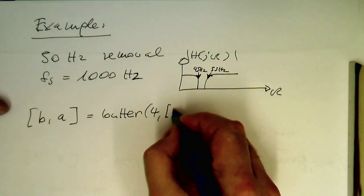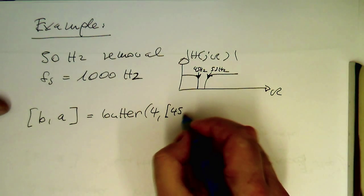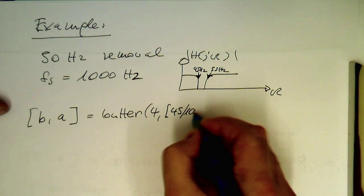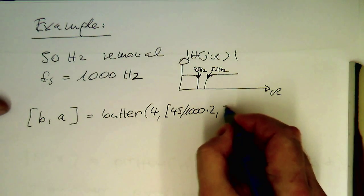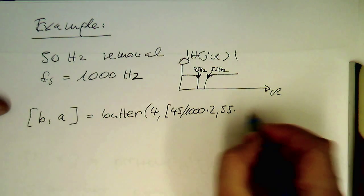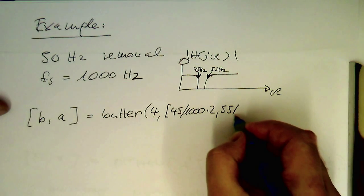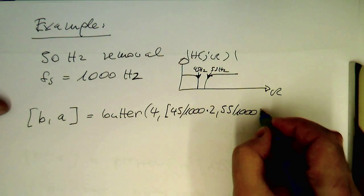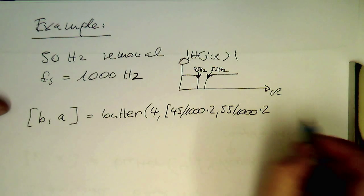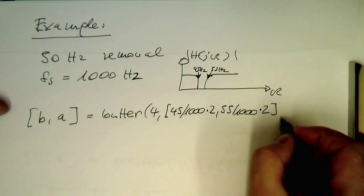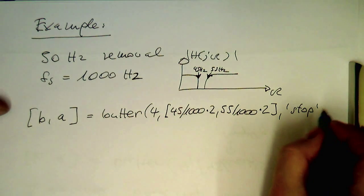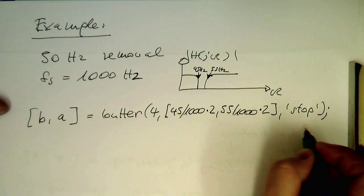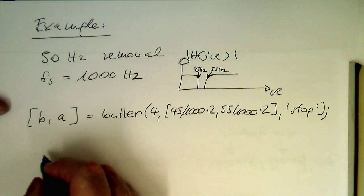And so now from 45 Hz divided by 1000 multiplied by 2, 55 then divided by 1000 multiplied by 2. So that's our frequency band and then we need to tell the butterworth command that we would like to have a stop band and that's all.